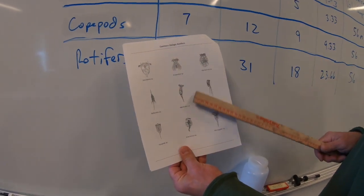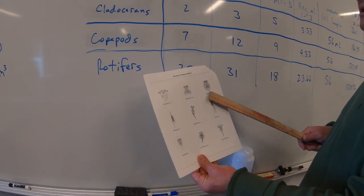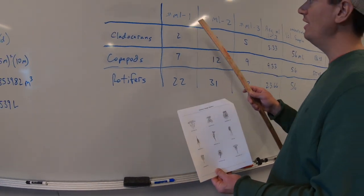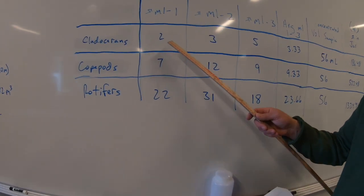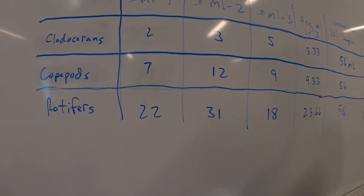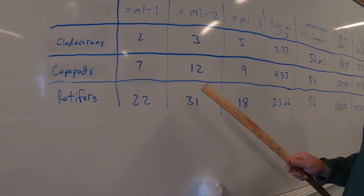And usually rotifers are in the greatest number, particularly in the spring. So you've gone through, you've looked at mill 1, you've looked at mill 2, you've looked at mill 3, and here are our results. And there's going to be a spreadsheet in Excel in Moodle that has this all set up for you.